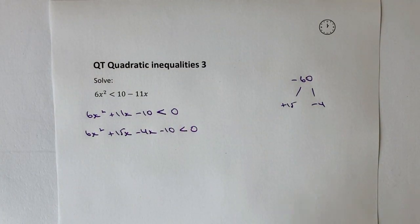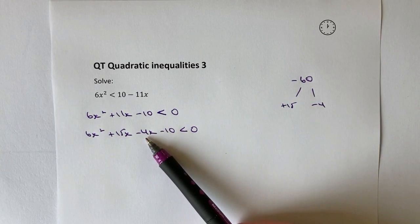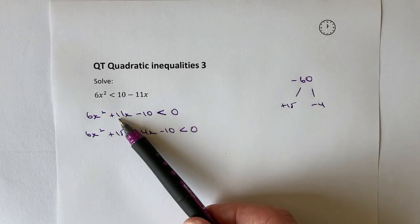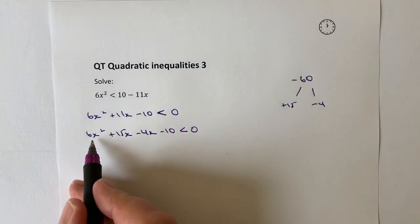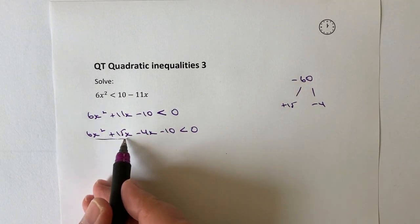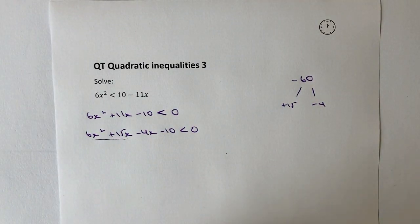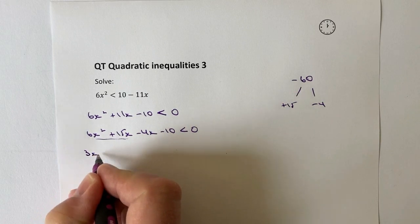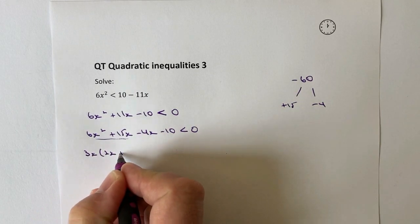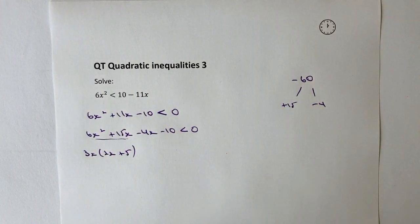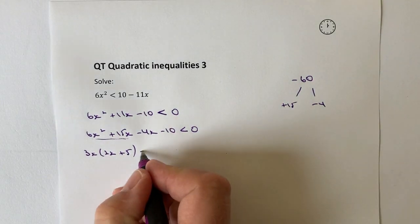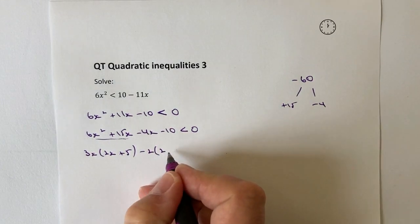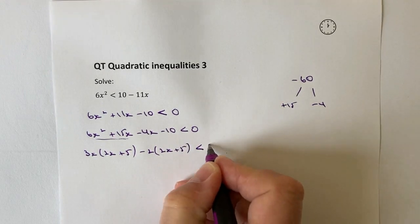Okay, now you can see in the middle this plus 15x and this minus 4x. When I add those together, I'm going to make 11x. Okay, so what I need to do then is to factorise the first two terms. Now, if I factorise the first two terms for 3x, I get 2x plus 5. And then I factorise the second two terms and I'm going to factorise those for minus 2. And guess what? I get 2x plus 5 again.